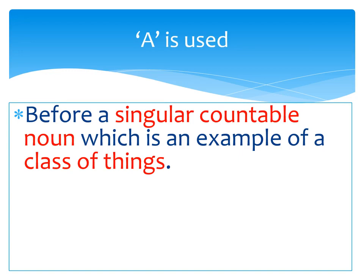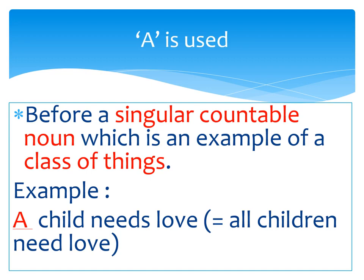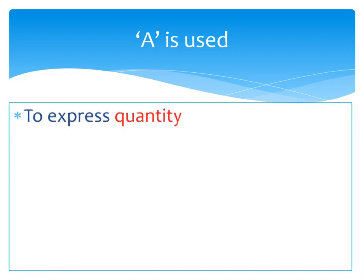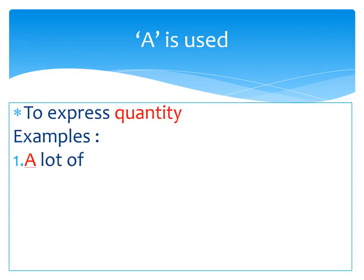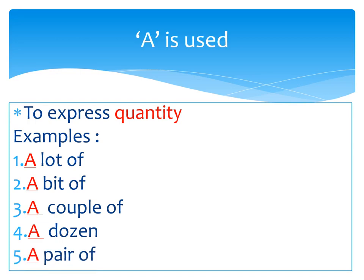Third use: before a singular countable noun which is an example of a class of things. For example, 'a child needs love' — here we are talking about the class of all children, but we use 'a child' because it denotes the class. Though every child needs love, we write 'a child.' Fourth use: to express quantity — for example, a lot of, a bit of, a couple of, a dozen, and a pair of.